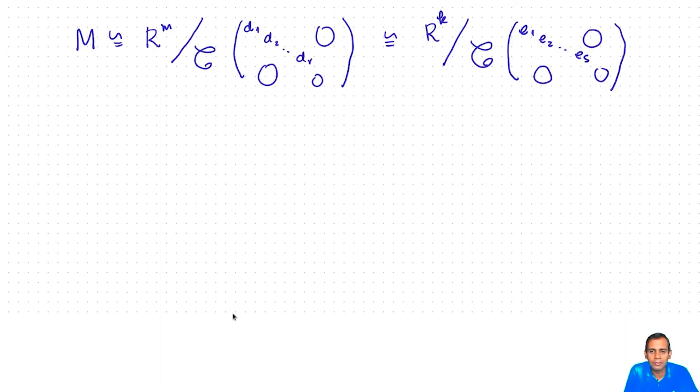Now suppose we have that M is isomorphic to, let us say, R^m mod column space of d1, d2, up to dr, and at the same time it is also isomorphic to R^k mod column space of e1, e2, up to es. Even the number of generators—we may have taken a lot more generators than we needed, and so it is not even clear that m should be equal to k a priori. So let us assume that k is less than m just without loss of generality.